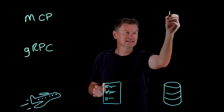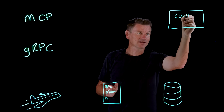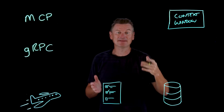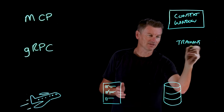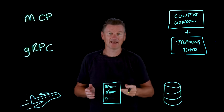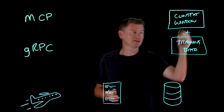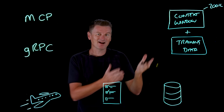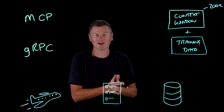LLMs are fundamentally limited by two things. First, their context window — everything an LLM can keep in mind at once. Second, their training data. Even LLMs with really big context windows, say 200K tokens, still can't fit everything — like an entire customer database, a codebase, or real-time data feeds.